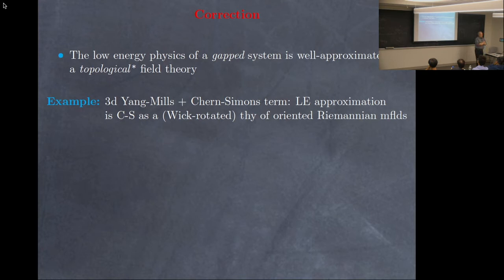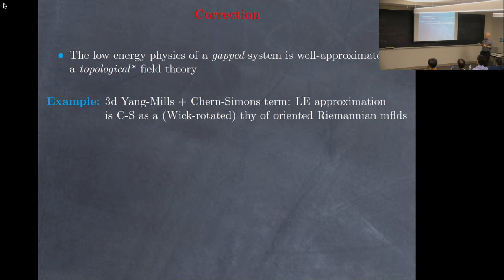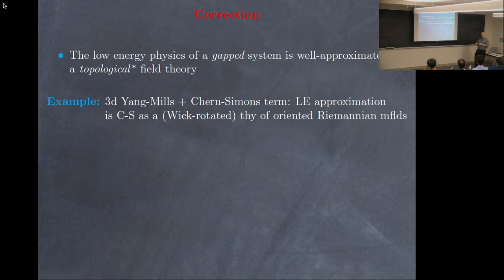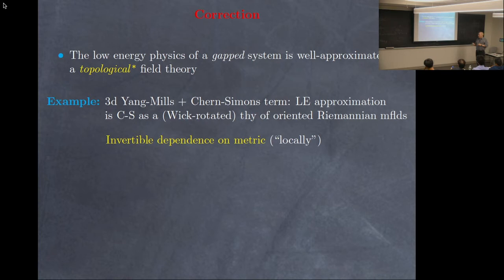Just imagine three-dimensional Yang-Mills with a Chern-Simons term. The long-distance approximation is usually just Chern-Simons theory as a topological field theory. But this physical theory is definitely relativistically invariant, and we expect that invariance persists in the approximation. When you do that, you should get a theory of oriented manifolds. But the thing you get is not quite independent of the Riemannian metric — this was already pointed out in Witten's first paper on the subject. That's not usually how we view Chern-Simons theory, but if we want to think of it as approximating a physical system, we should think of it that way.